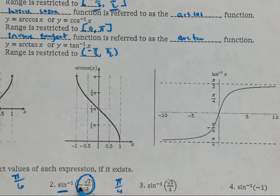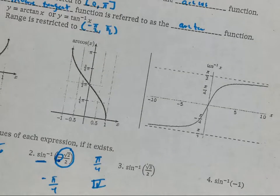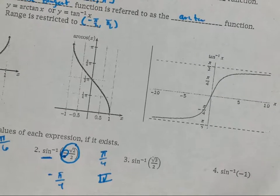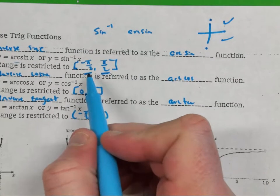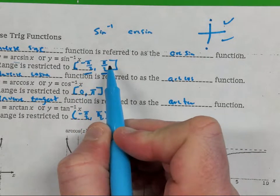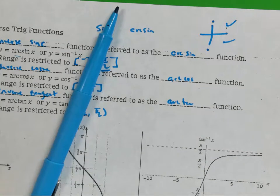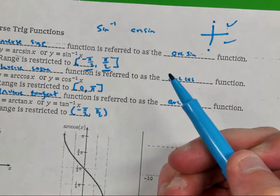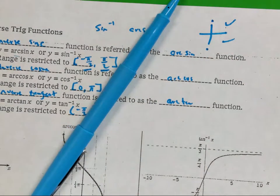Arc sine has to fall between negative pi over two and pi over two — think of it as negative one-half to one-half on the number line. Seven pi over four as a mixed number is one and three-fourths, which doesn't fall between those two numbers. But if seven pi over four is in quadrant four, I can go backwards and write negative pi over four instead, because negative one-fourth does fall between negative one-half and one-half.